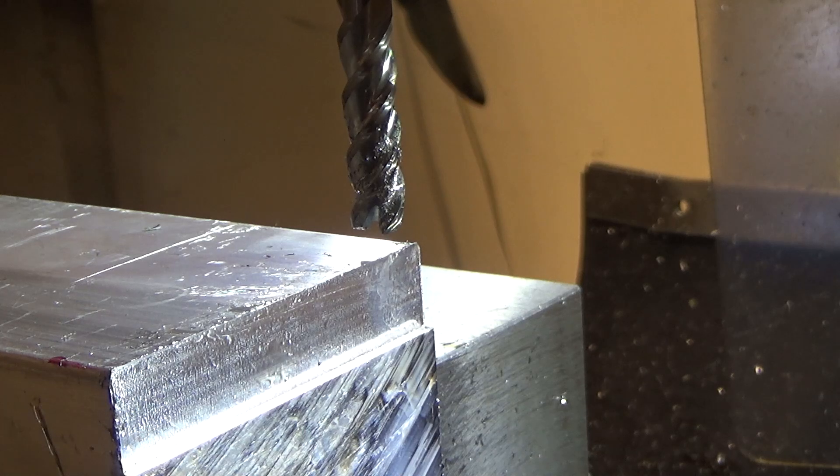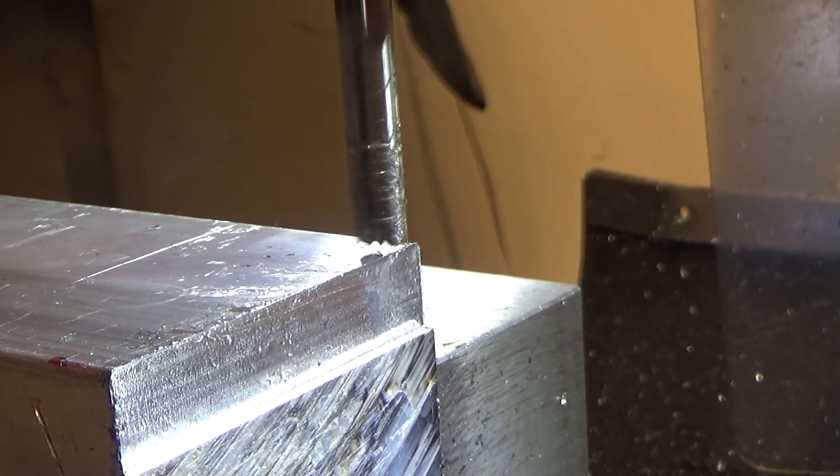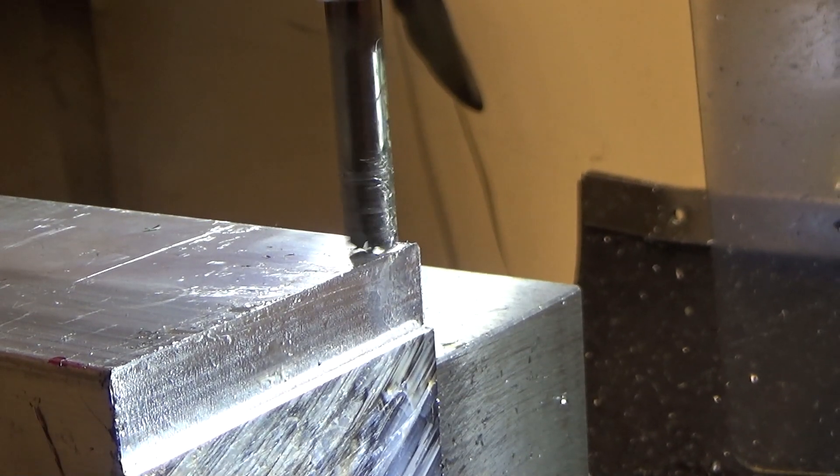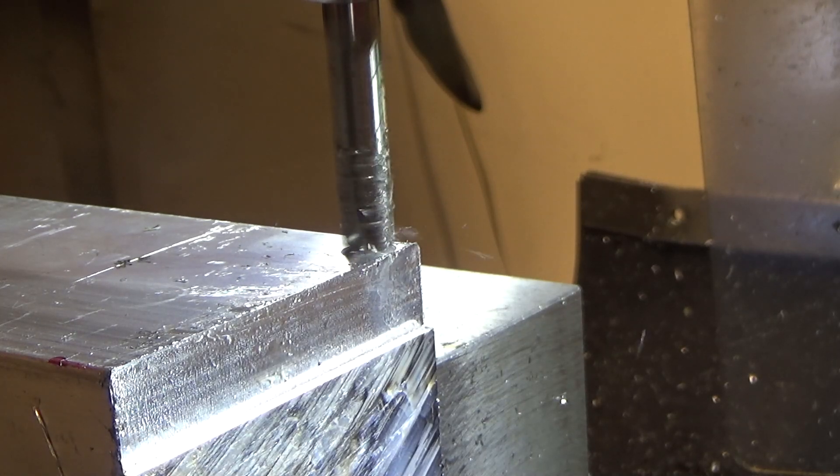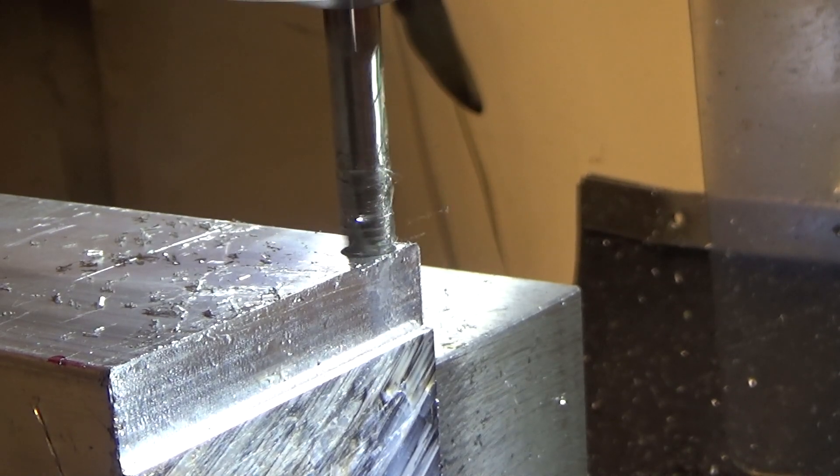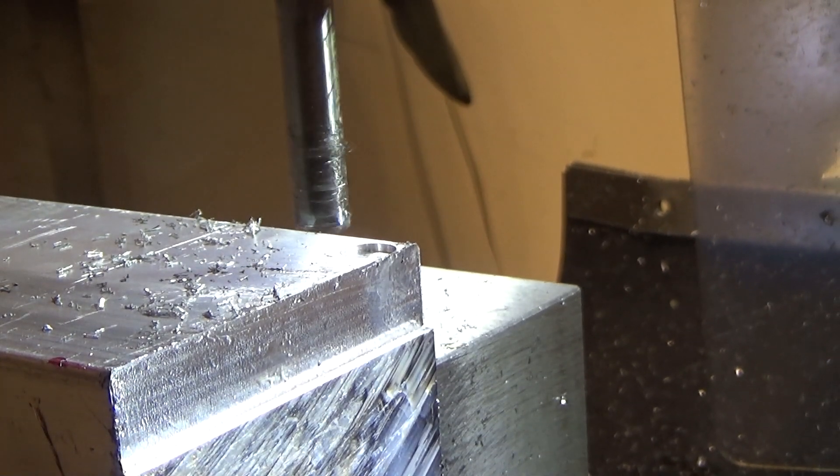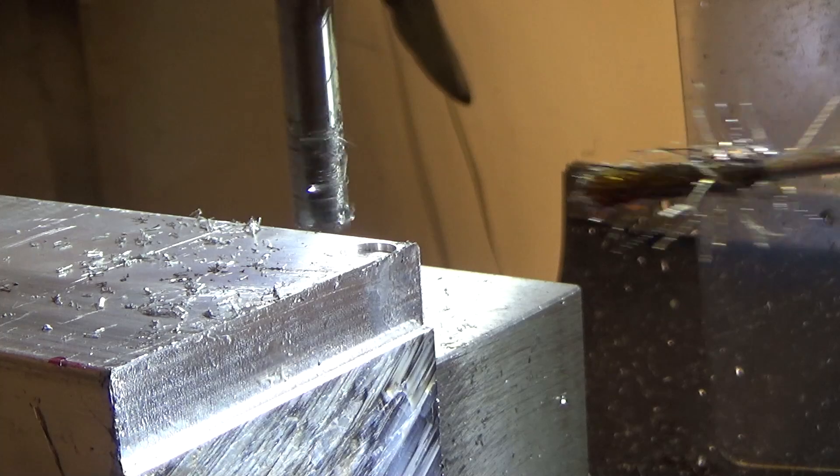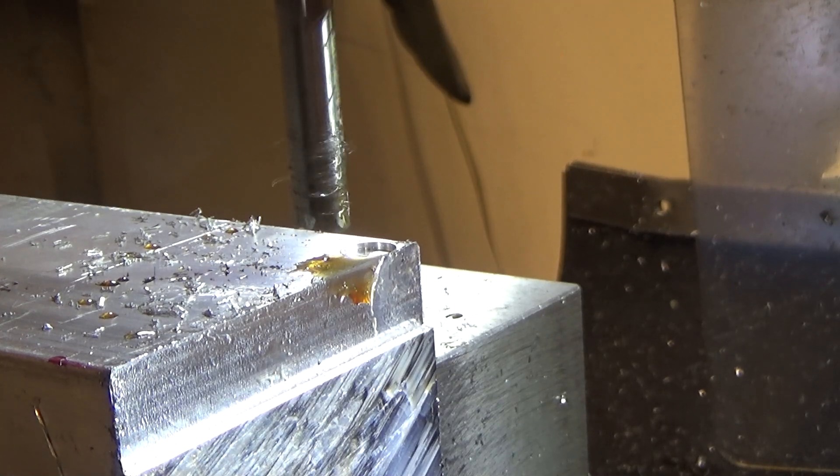So next, this looks like a center cutting bit, so let's try some plunge cutting. First we'll do it without lube, then we'll do it with lube and see how it performs. Let's do a full engagement, so we'll come over a little bit here. And... very nice. Finish is okay. Let's try it with lubrication. And a much better finish.